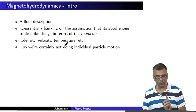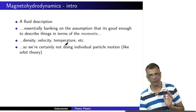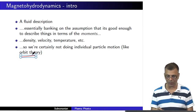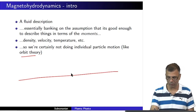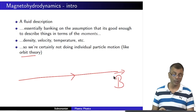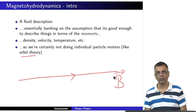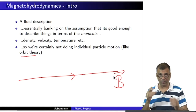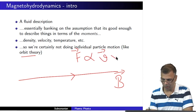We are certainly not doing individual particle motion. We are not doing orbit theory. What orbit theory means is: consider a magnetic field — we normally use the symbol B to denote it. What does a charged particle do when it encounters a magnetic field? A charged particle is subjected to what is called a Lorentz force, which is proportional to the velocity of the particle as well as the magnetic field.